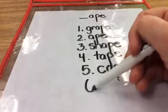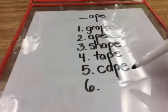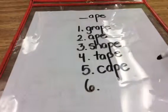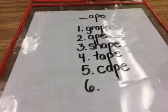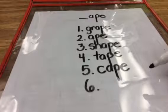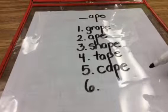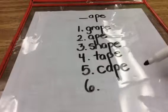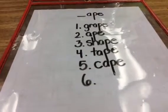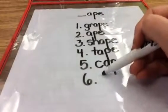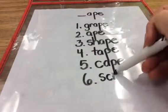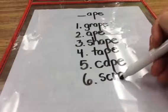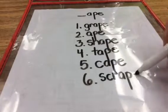And number six is that long one — scrape. So if you need to say the word, stretch it out. Scrape. Write the sounds you hear — that's how we can spell some of these harder words. S-c-r-ape. Scrape.